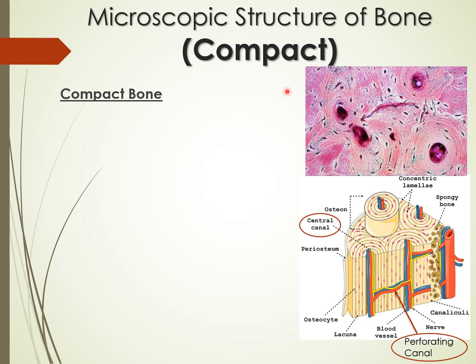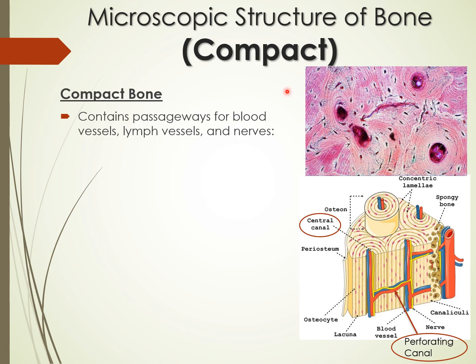We've now covered the macroscopic structure of bones — compact bone, spongy bone, different bone classifications, and bone markings. Now we'll look at the microscopic structure of bones, starting with compact bone.